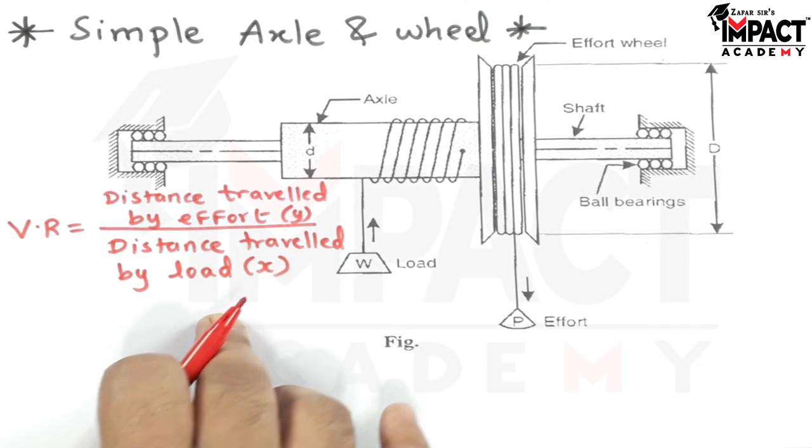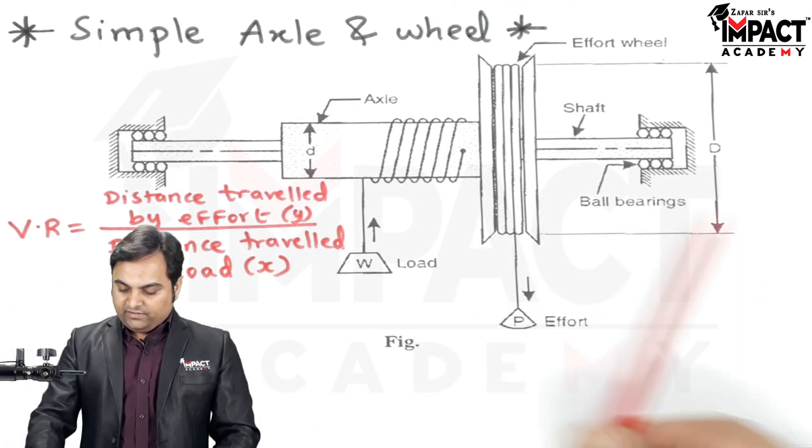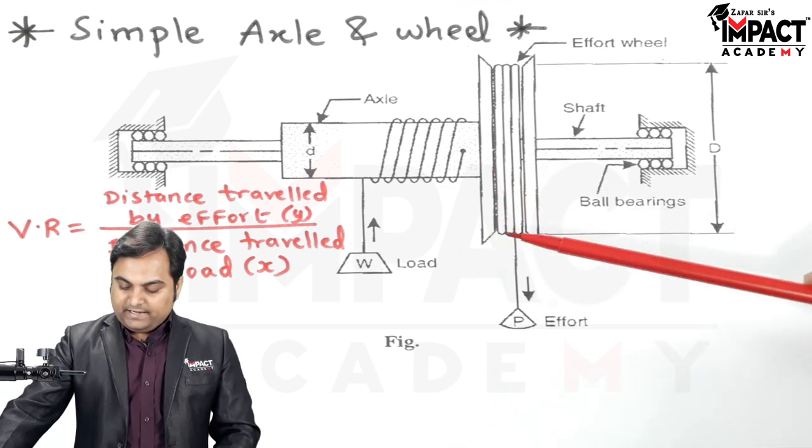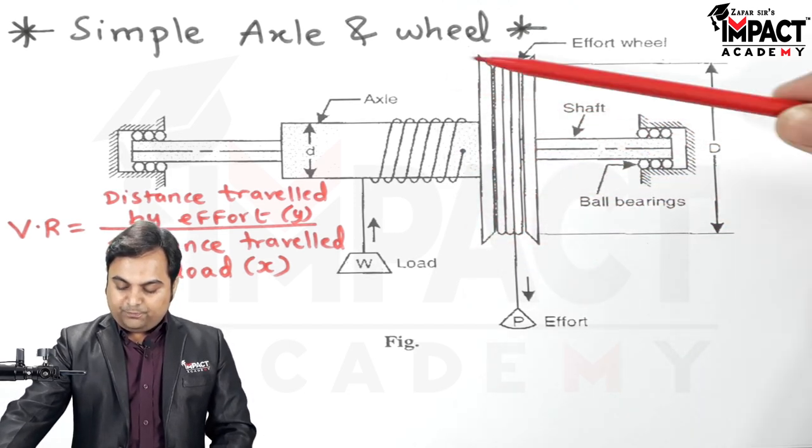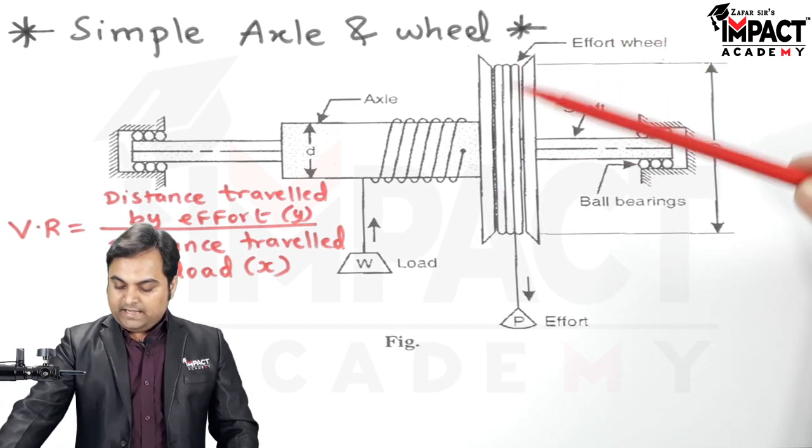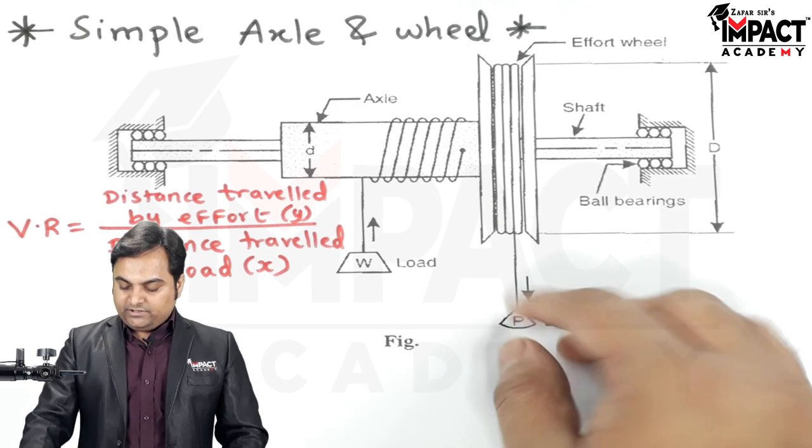Distance travelled by load denoted by X. Now in this simple axle and wheel as we can see from the diagram there is an effort wheel. At the end of this effort wheel a rope is wound, or instead of that we can also have a chain. And here we are applying this effort, that is we would be pulling this rope.